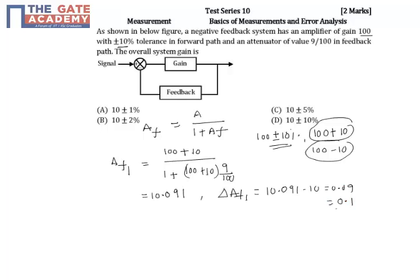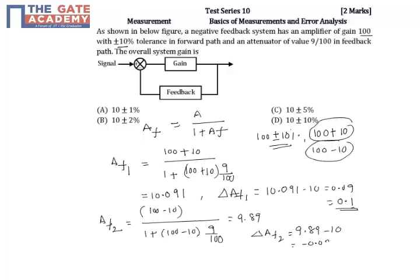Similarly, A_f2, this is because of 100 minus 10. So this is (100 minus 10) divided by 1 plus (100 minus 10) times 9 by 100. If you simplify this you will get 9.89. So delta A_f2, which is 9.89 minus 10, is also minus 0.09 or minus 0.1.